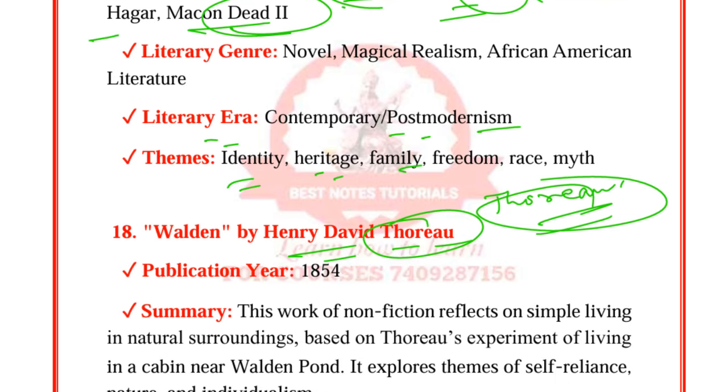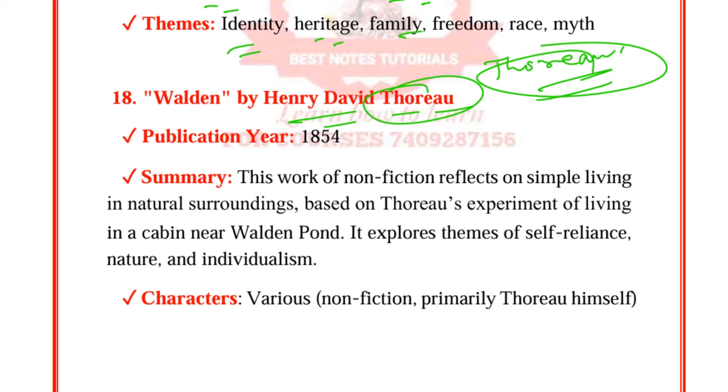Song of Solomon belongs to the contemporary post-modernist literary era. Themes are identity, heritage, family, freedom, race, and myth.